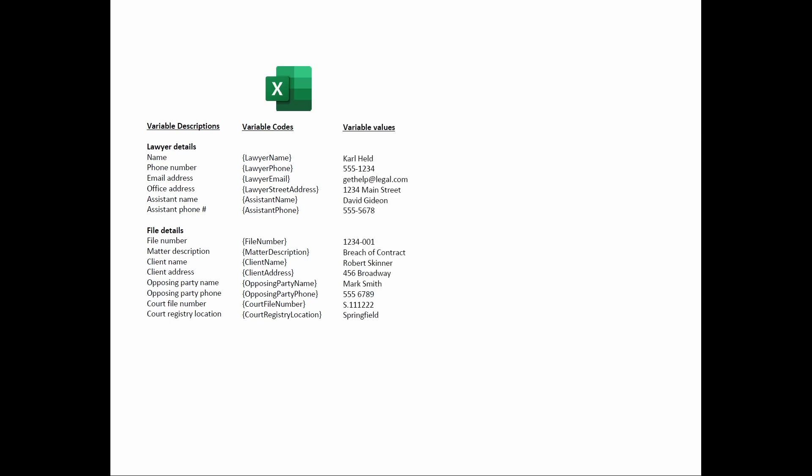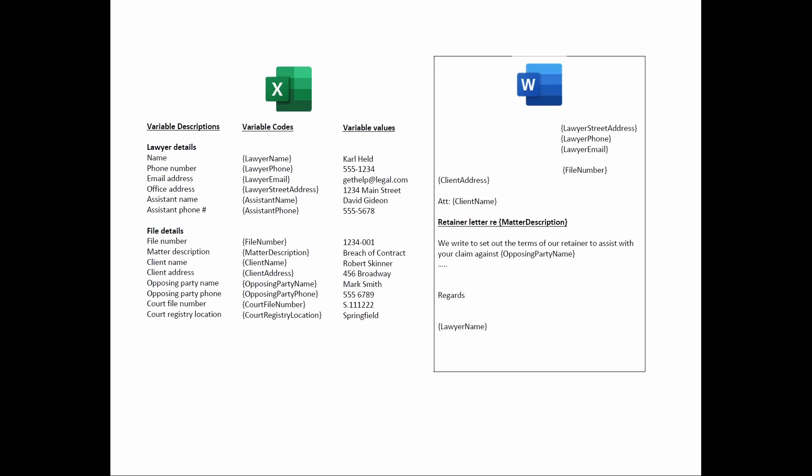Then finally, the variable values must be specified, and that data is also entered onto a sheet in the form builder spreadsheet for that client. Then the user can prepare a library of Word document forms that the data will be written into. Those Word document forms can contain field codes, again wrapped in curly brackets, wherever data is to be written into the Word document from the form builder spreadsheet.